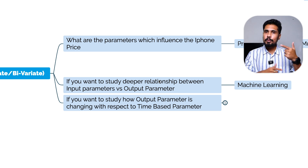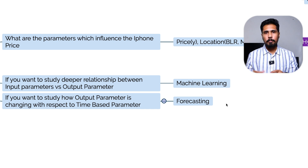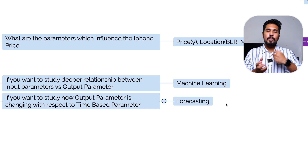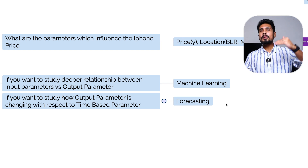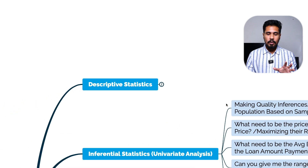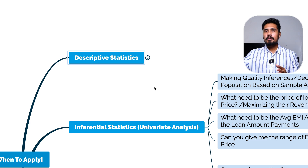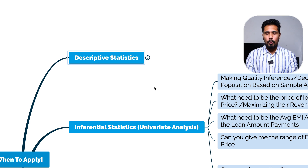If you want to study how an output parameter changes with respect to a time-based parameter, you use forecasting. This is an overview of entire statistics — based on your purpose, you pick the right statistical approach. If you want to study deeper relationships between output and input parameters, go directly with ML. The most important segments are descriptive statistics and high-level understanding of all these concepts, which will help you in the job market and data science interviews. Next, we'll start with descriptive statistics and EDA in our next video.